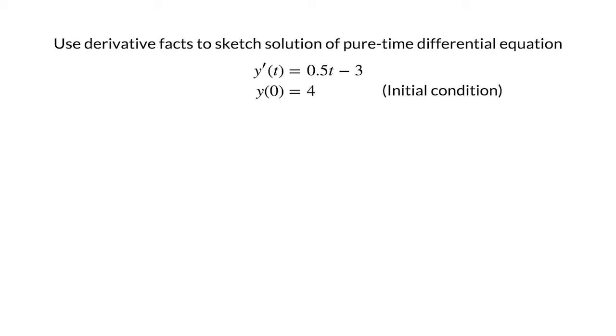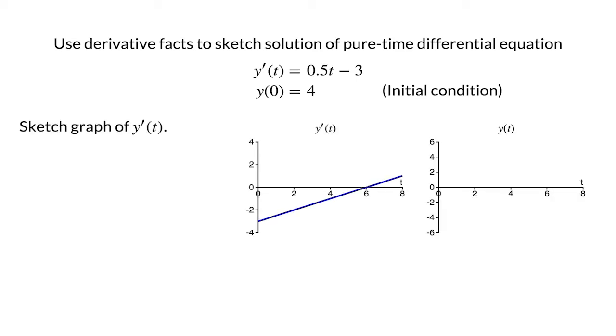Since we are using our graphical approach, the first step is to draw the graph of the derivative y'(t). It is a line with slope one-half and y-intercept minus 3. We need to graph the derivative carefully enough so that it correctly intercepts the t-axis at t equals 6, as it will be important that y'(6) equals zero.